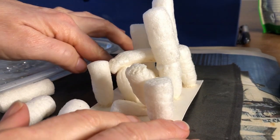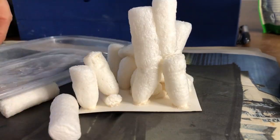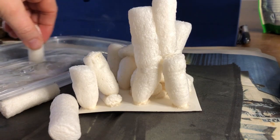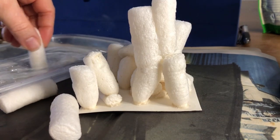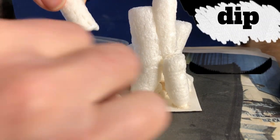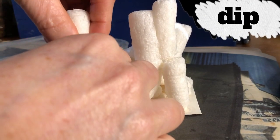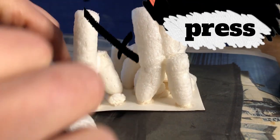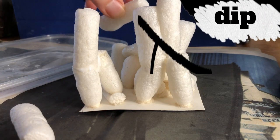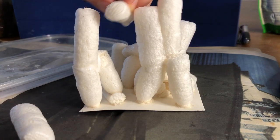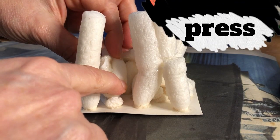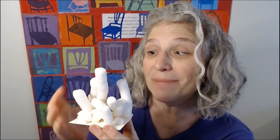A sculpture has more than one side. A sculpture looks different depending which side you're looking at. So dip and press. Dip, and how do I want to put this one down? Maybe press.